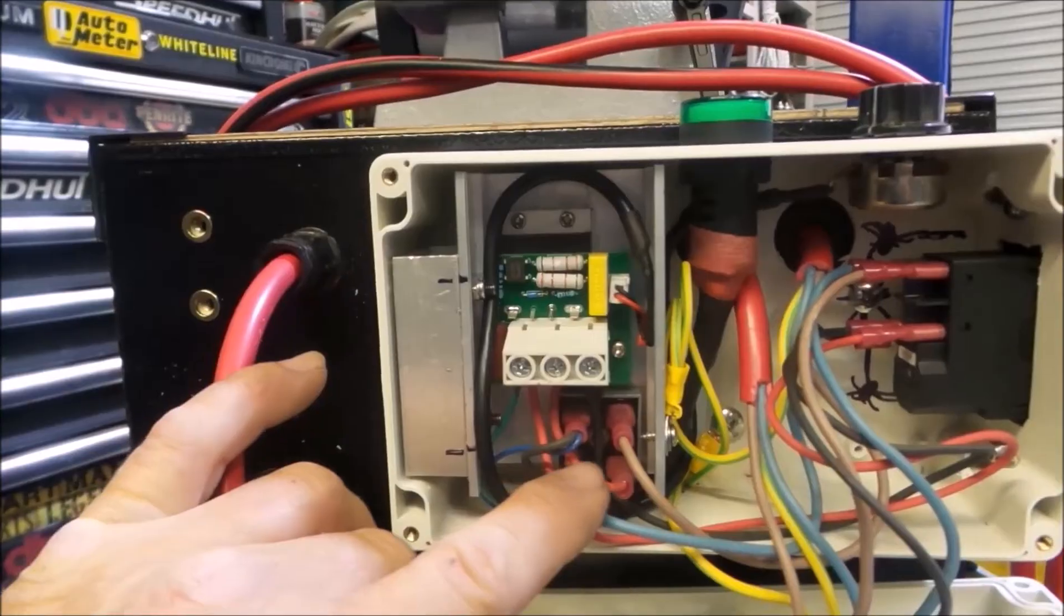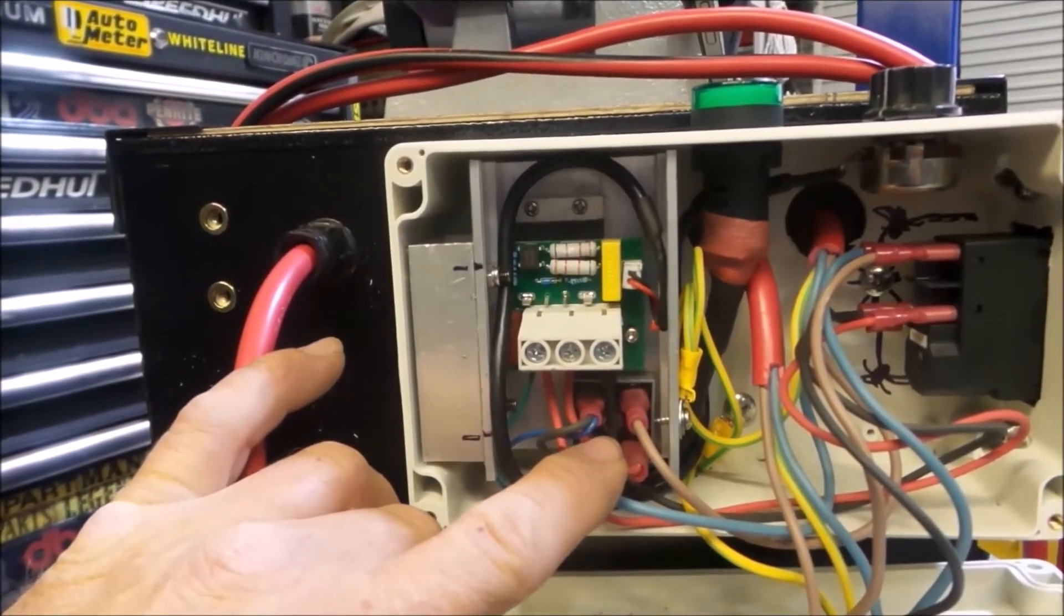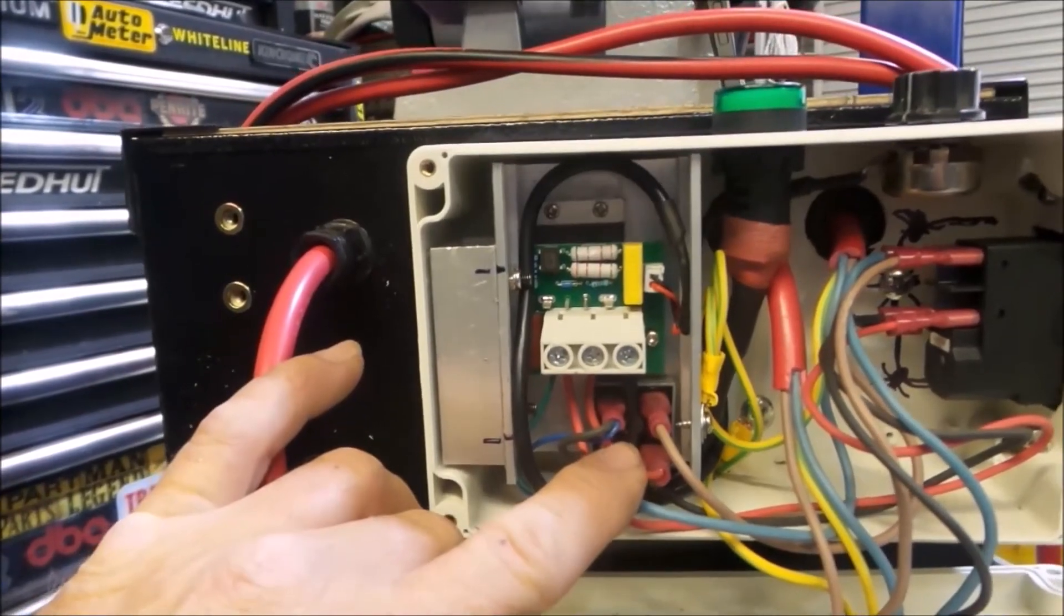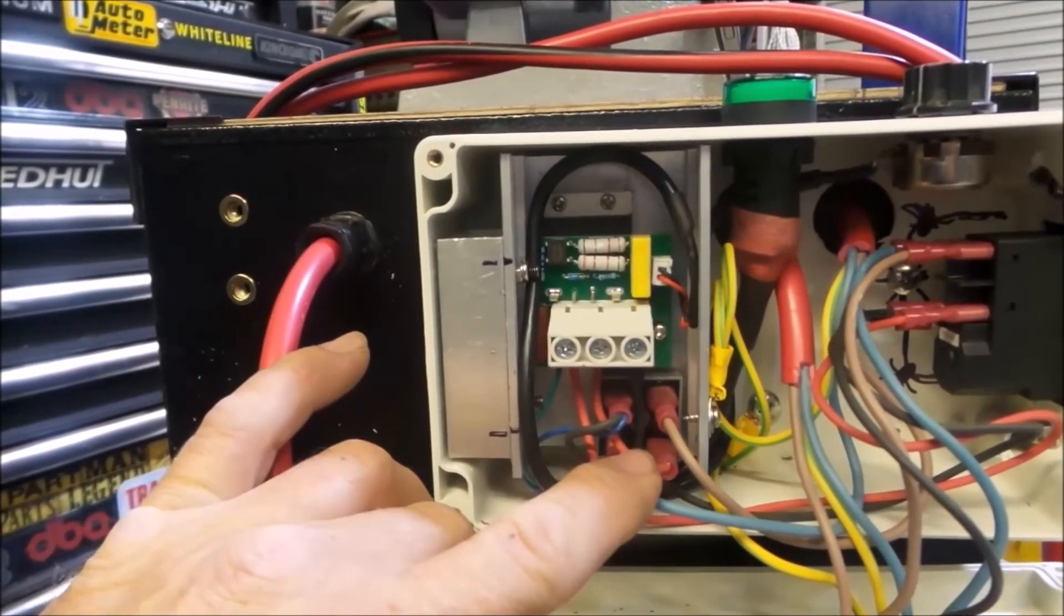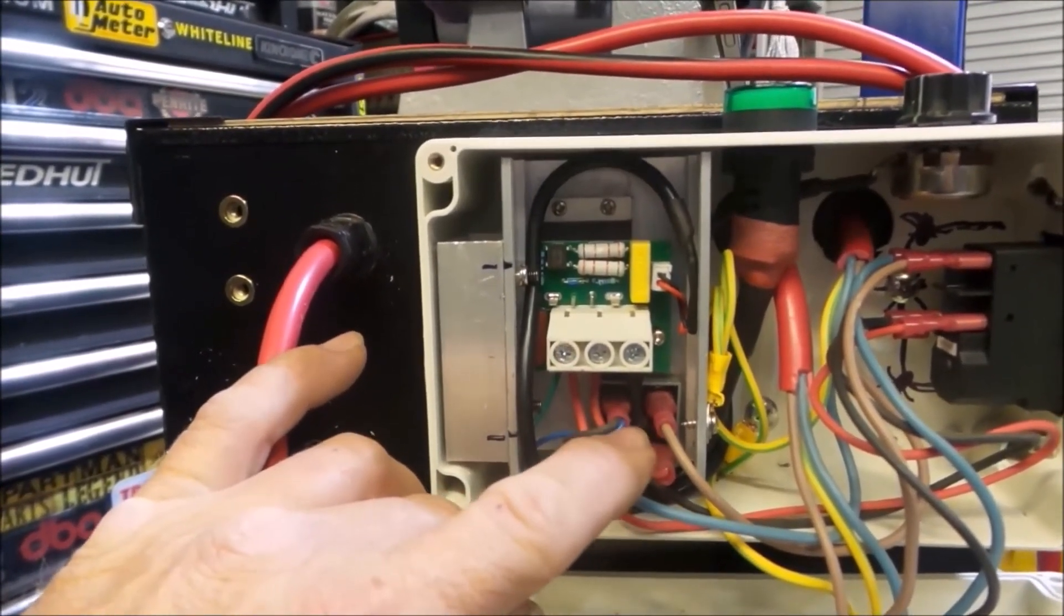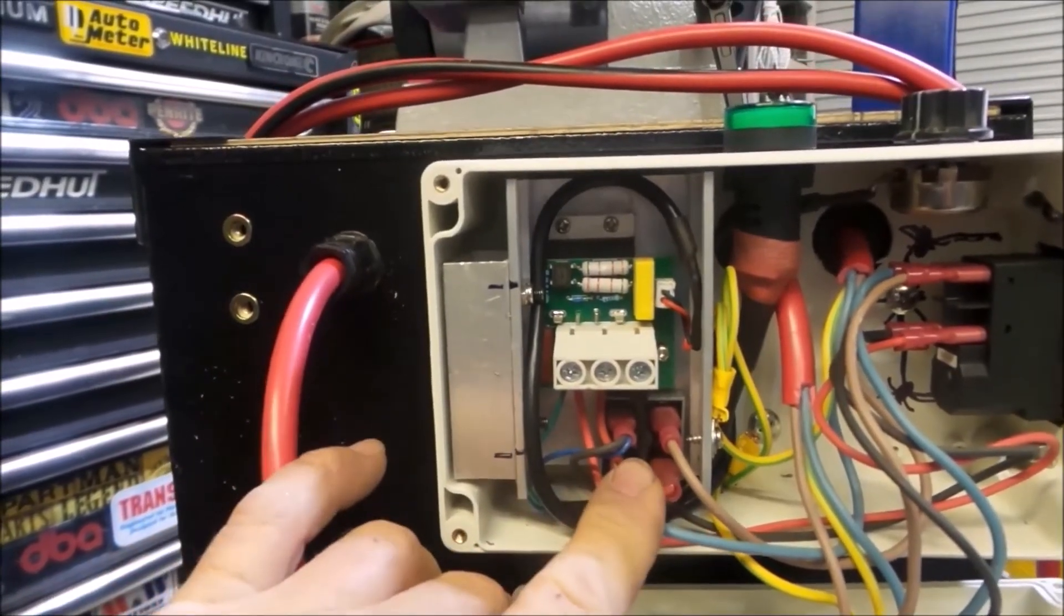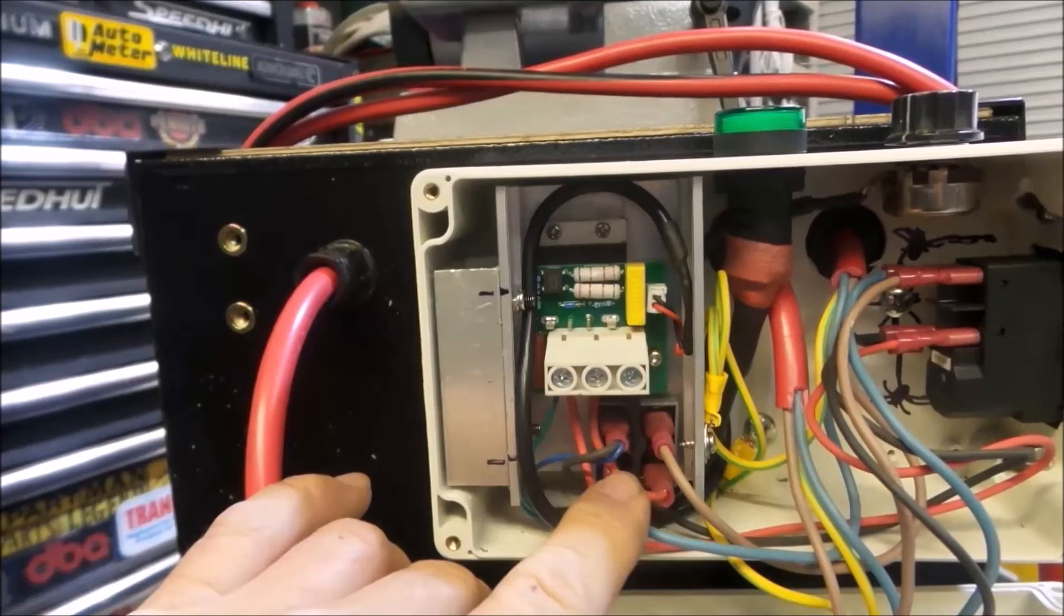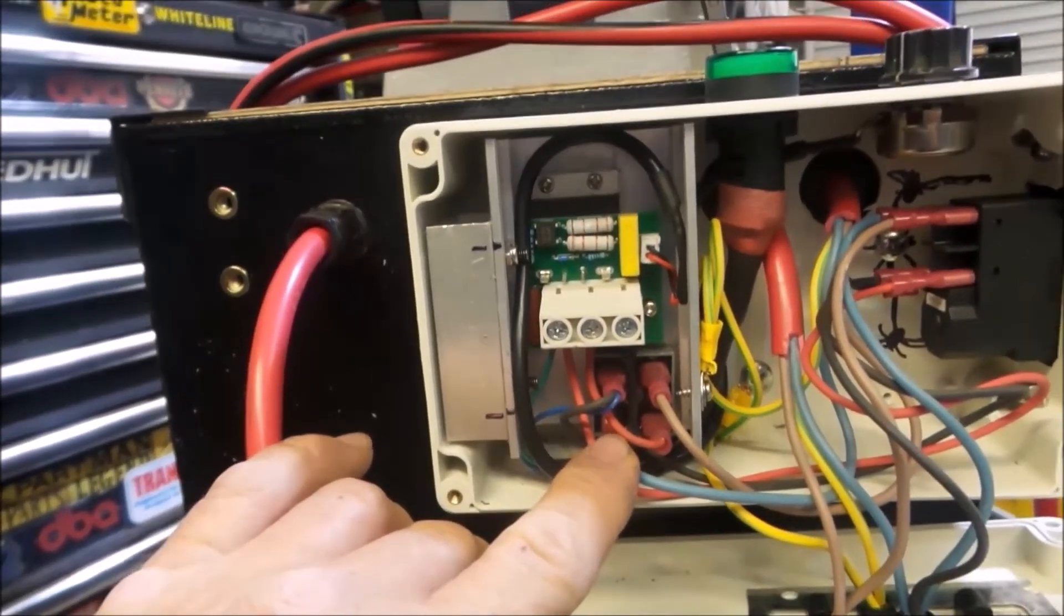Another thing I didn't mention, the bridge rectifier, I've actually mounted it onto the heatsink as well because they do get a little bit hot. So I've just put some heatsink compound on the back of it. They have a hole through the center, so I've just run a self-tapper I think through it, or a bolt. Not sure which now. And just fixed it to the heatsink. It just makes it all nice and neat.